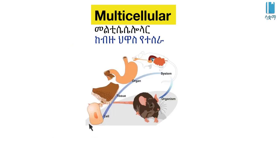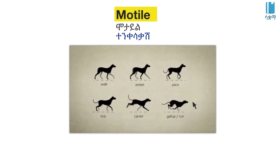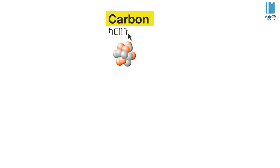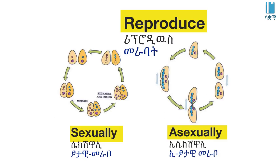Animals are multicellular. Their cells are organized into tissues. They are motile — able to move. They store energy as glycogen rather than starch. They reproduce sexually or asexually.